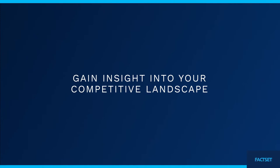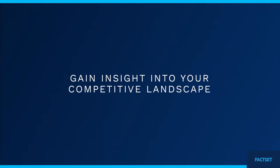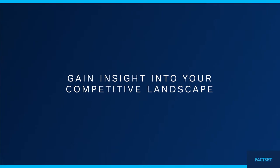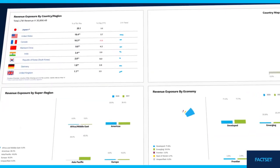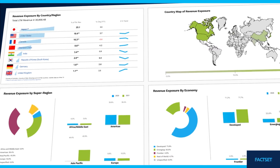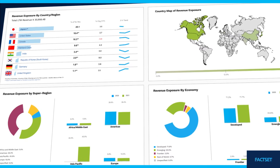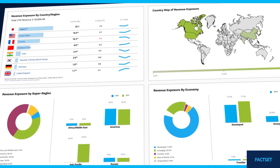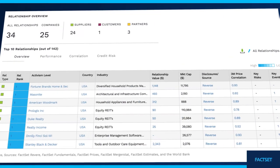Comprehend what your competitors do, where their risks lie, and what other organizations they are connected to using FactSet's proprietary classification system, geographic revenue data, and supply chain relationship data.